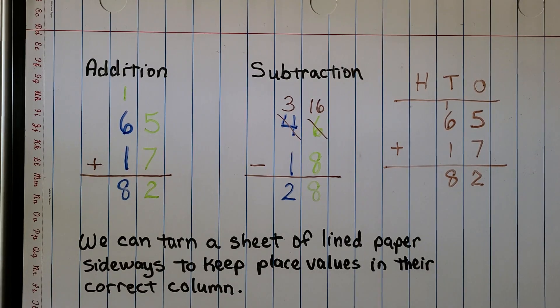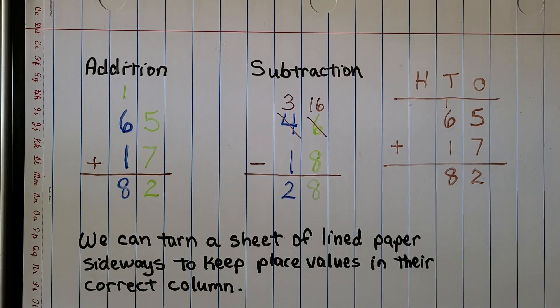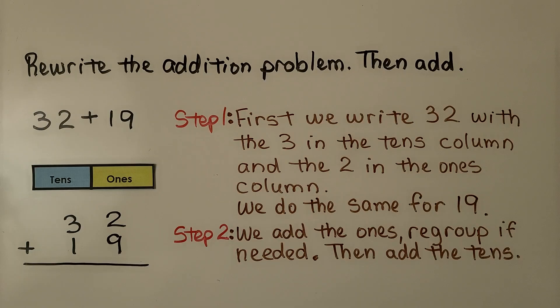We can even turn a sheet of lined paper sideways to keep the place values in the correct column. We need to rewrite the addition problem, then add. We have 32 plus 19.